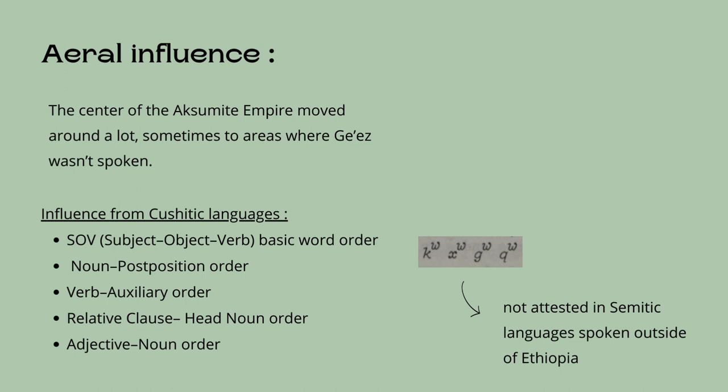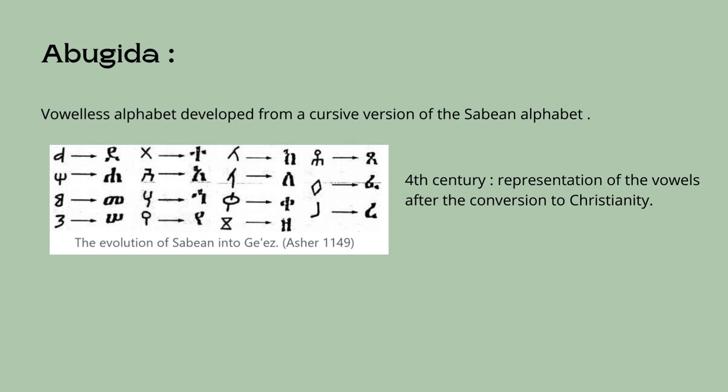Typologically, the orders noun-postposition, verb-auxiliary, relative-clause-head-noun, and adjective-noun are all correlated with and tend to co-occur with subject-object-verb order cross-linguistically. The existence of labiovelars in Ethio-Semitic language is also considered to be of Cushitic influence. Vocalized Ge'ez inscriptions and modern Ethio-Semitic languages either possess them or have traces of them, whereas they are not attested in Semitic languages spoken outside of Ethiopia. In the case of the alphabet, the vowel-less alphabet developed from a cursive version of the Sabaean alphabet, which is an ancient group of South Arabians, although some also believe it to have descended from Egyptian hieroglyphs.